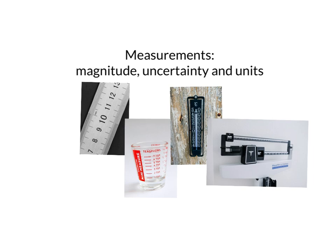When we make a measurement, we obtain a number or a magnitude for how much of a particular thing we have. We also have an uncertainty in that measurement. If we measure the same thing multiple times, we're not going to get exactly the same answer every time. The spread in those values that we measure tells us how certain we are of our measurement, and that's the uncertainty in the measurement.